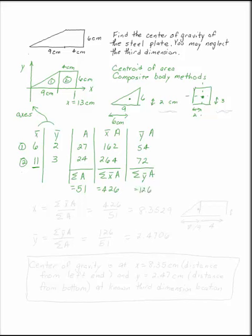We know that x bar of the entire thing is the sum of the x bar A's over the sum of the A's. So in that case, that looks like 426 over 51.